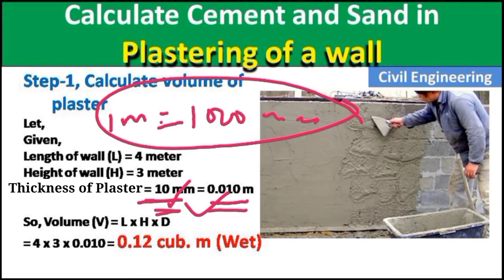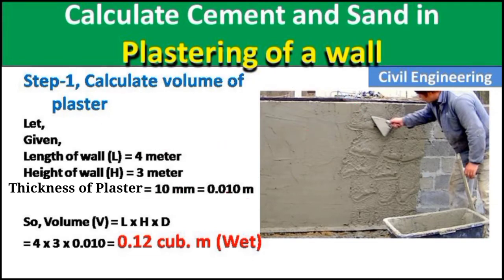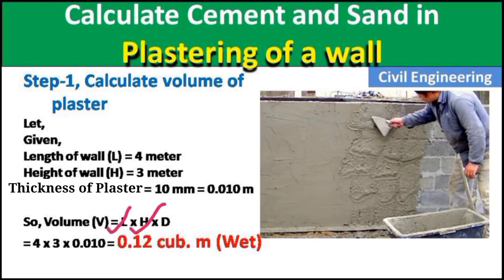The volume formula for any cubical shape is L × H × D, which is length into height into thickness. Putting in all values: 4 × 3 × 0.010 = 0.12 cubic meters. This is the wet volume of the mortar, which we need to convert to dry volume to calculate cement and sand quantity.